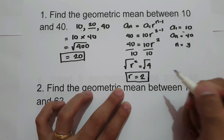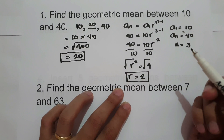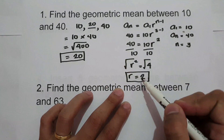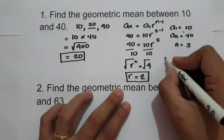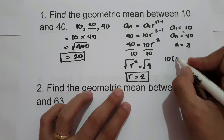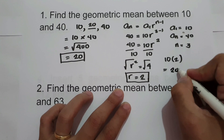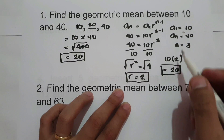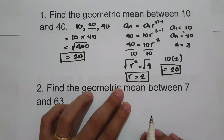Since the common ratio is 2, to find the geometric mean, simply multiply the first term by the common ratio: 10 times 2 equals 20. So the geometric mean between 10 and 40 is 20.